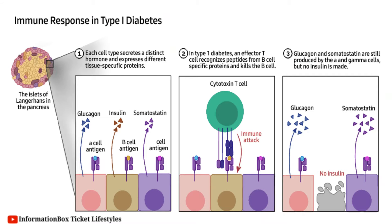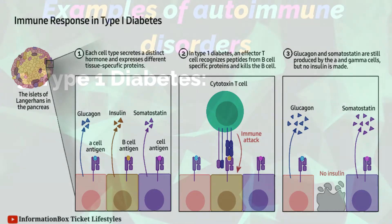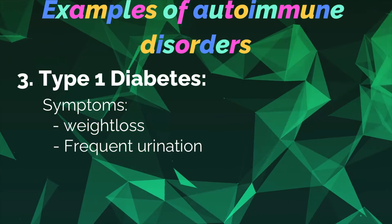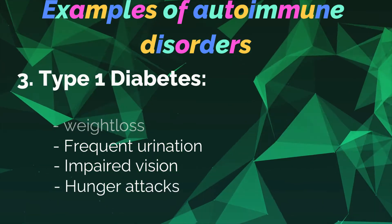The diagram shows the immune response in type 1 diabetes. Each cell type secretes a distinct hormone and expresses different tissue-specific proteins. In type 1 diabetes, an effector T cell recognizes peptides from beta-cell-specific proteins and kills the beta cells. Glucagon and somatostatin are still produced by alpha and gamma cells, but no insulin is made. Symptoms are weight loss, frequent urination, impaired vision, and hunger attacks.